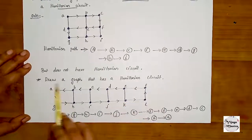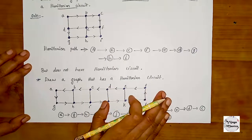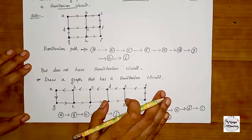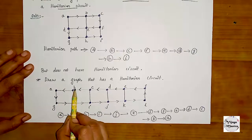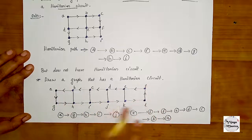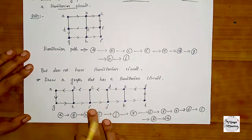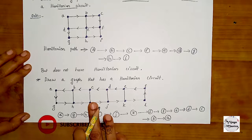Draw a graph that has a Hamiltonian circuit. Here we have a graph with vertices A, B, C, D, E, F, G, H, I, J, K, L. This graph is a Hamiltonian circuit — the starting vertex and ending vertex are the same.